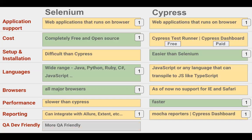Coming to QA and dev friendly: in general, Selenium is mostly created and managed by QA teams using their preferred language to create test scripts, and the dev team does not have much of a role in the framework. Whereas Cypress is very QA and dev friendly — the same Cypress project can be used by the dev team for unit testing and by the QA team for end-to-end testing. Therefore, we can give one extra point to Cypress.